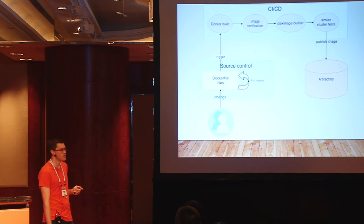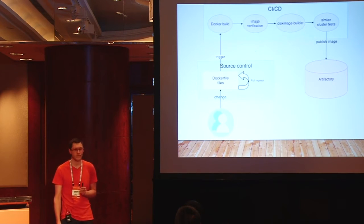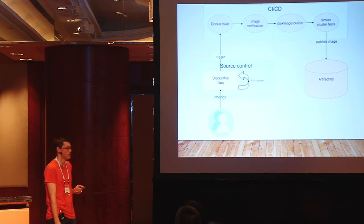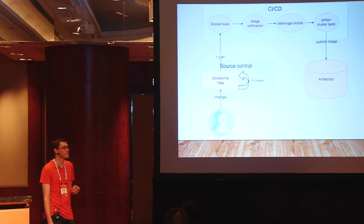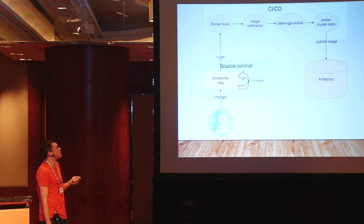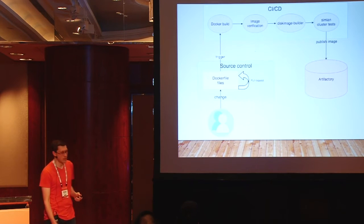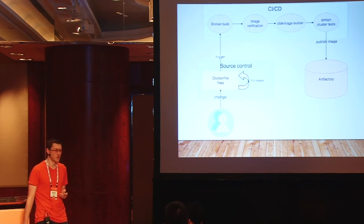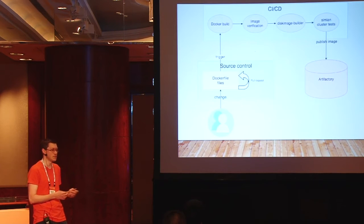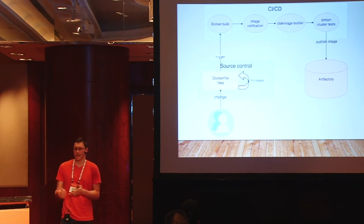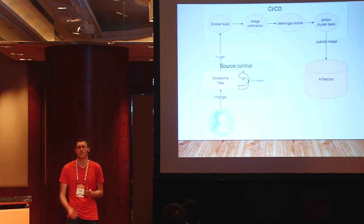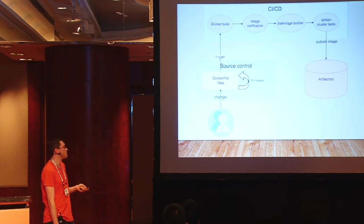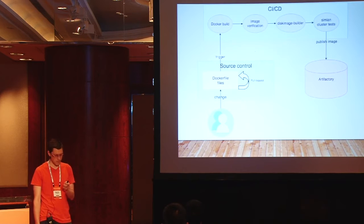Our Docker image is now bootable. We use an OpenStack tool called DiskImage Builder to convert the Docker image into something that can be booted. Once done, we can do more advanced cluster integration testing to verify the image spins up and produces the kind of cluster we wanted. Once all tests pass, we publish the image to our artifact store.